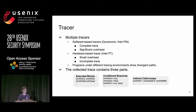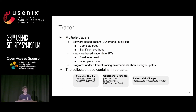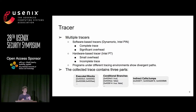The collected trace contains three parts. The first part is all executed basic blocks — we record the start and end address of each. The second part covers conditional branches: we record which branch is taken and which is not. The third part covers indirect calls and jumps: for each indirect call, we record each target and how many times that target is invoked when running the test cases.